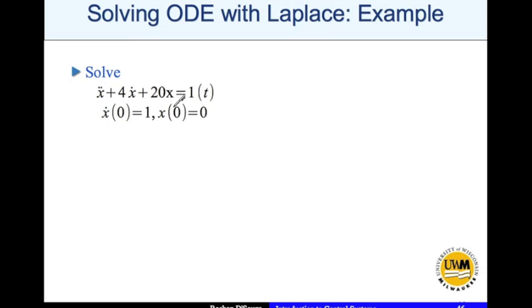When we say x of 0, t equal to 0. Remember that x, x dot, and x double dot are all functions of t.